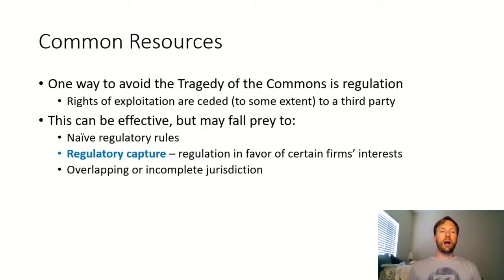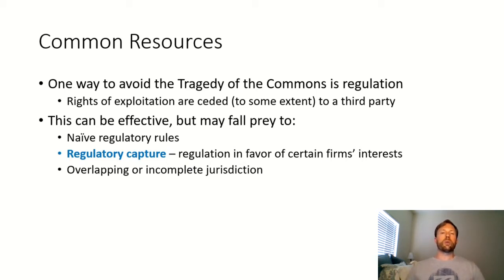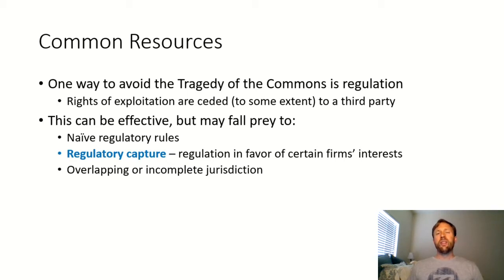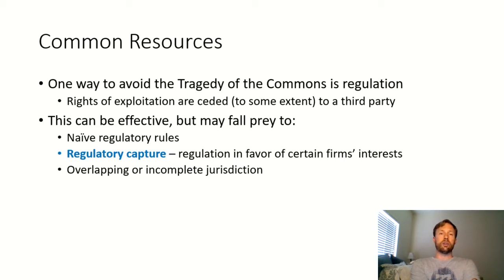So that's the tragedy of the commons. How can you get around it? We'll talk about a couple of ways. One is just through regulation — command and control. The idea is the firms exploiting the resource realize they can't trust each other, so they cede some of their property rights over the resource to a third party, typically the government. This can be effective, but it's not bulletproof — it can fall prey to certain weaknesses. One of those is naive regulatory rules.